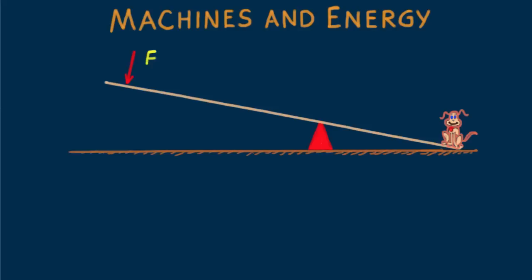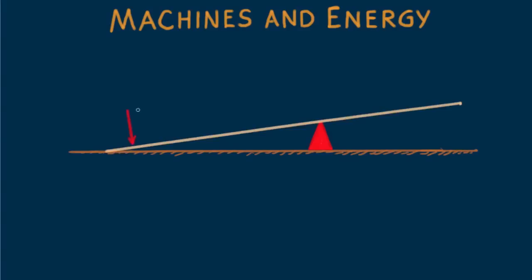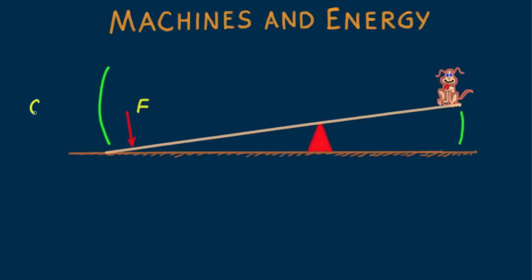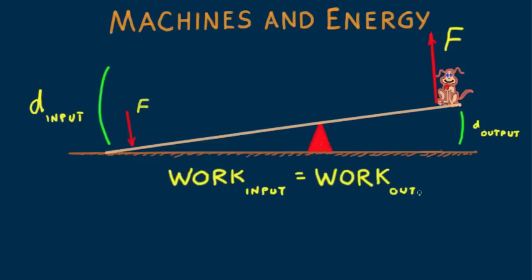Operation of a lever follows the conservation of energy. At the same time we do work on one end, say by pushing down on it, the other end does the same amount of work in lifting our load, in this case, dog Bow. In accord with the conservation of energy and assuming no friction, work input will equal work output. Or, force times distance input will equal force times distance output.